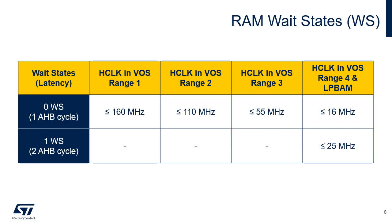To correctly read data from SRAMs, the appropriate number of wait states must be programmed depending on the AHB clock frequency, HCLK, and voltage scaling range, as shown in this table. Note that one wait state is required in voltage range 4 when the frequency exceeds 12 MHz.